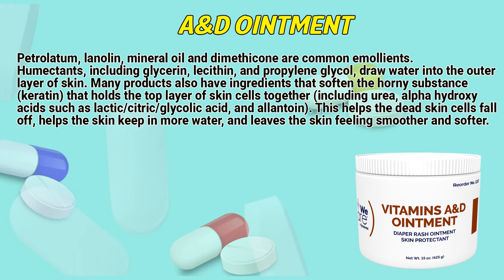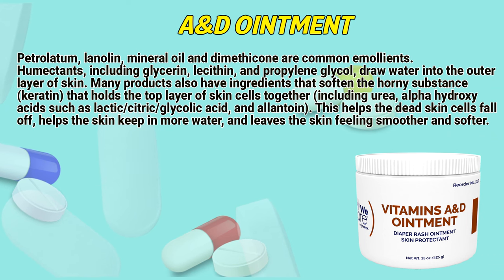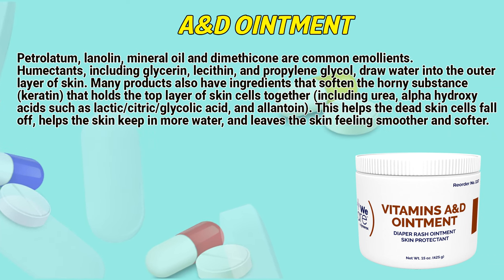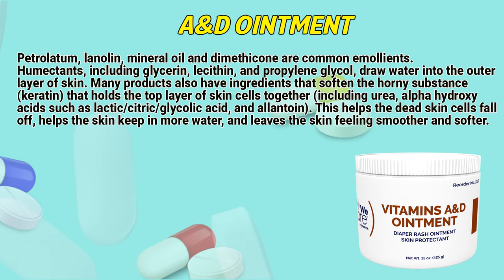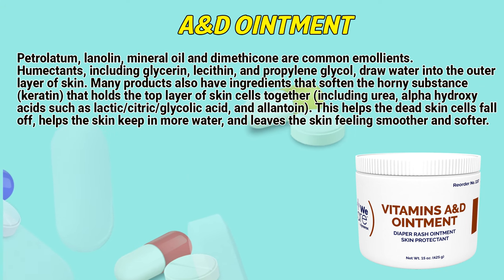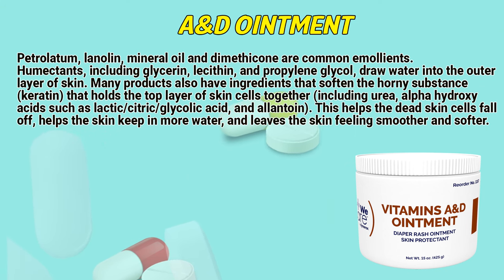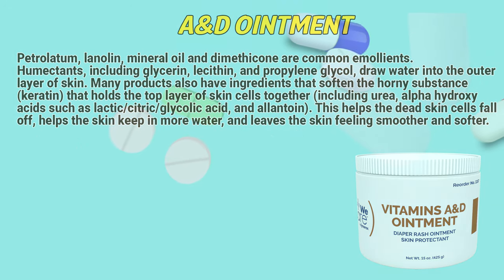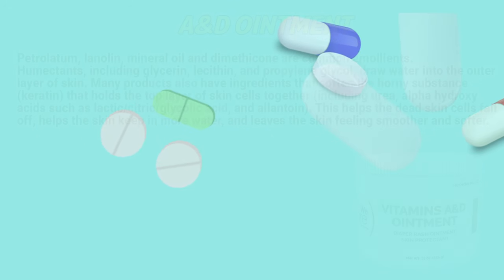Many products also have ingredients that soften the horny substance keratin, that holds the top layer of skin cells together, including urea, alpha-hydroxy acids such as lactic, citric, and glycolic acid, and allantoin. This helps the dead skin cells fall off, helps the skin keep in more water, and leaves the skin feeling smooth and softer.